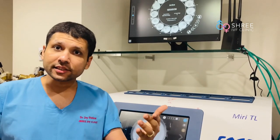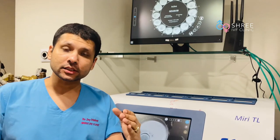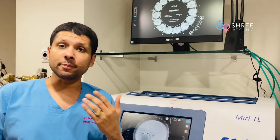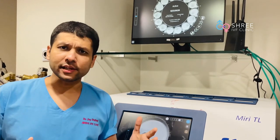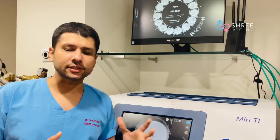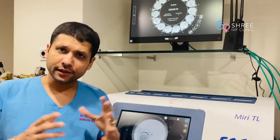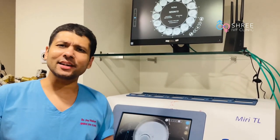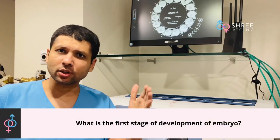After this, if fertilization occurs, the embryo begins to grow. The embryo is cultured inside a culture system, inside an incubator, and here we are going to demonstrate and give you an example of what is the first stage of development.